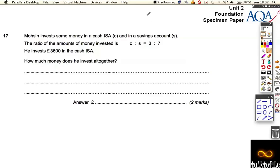Question 17, the last question on this exam paper. We've got someone investing money into a cash ISA and a savings account, split up in a certain ratio.